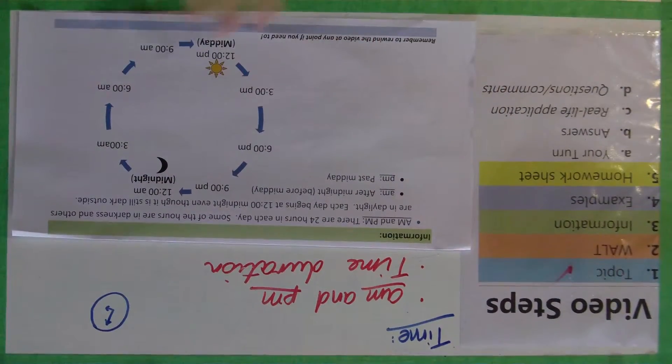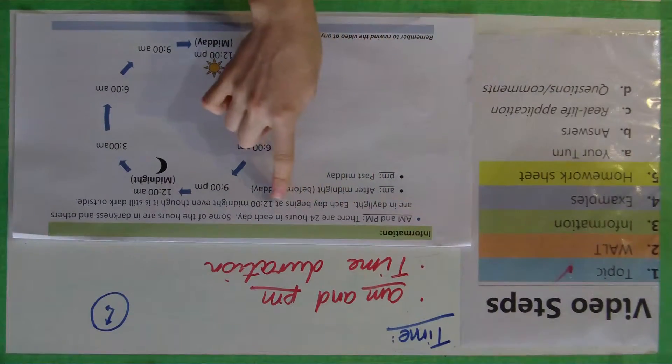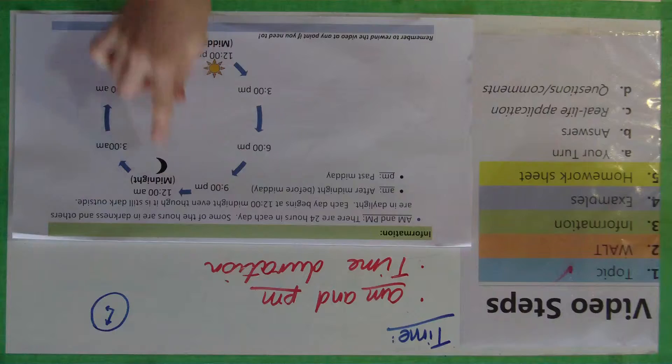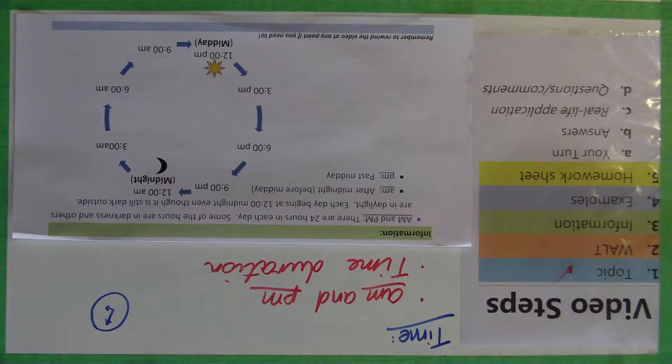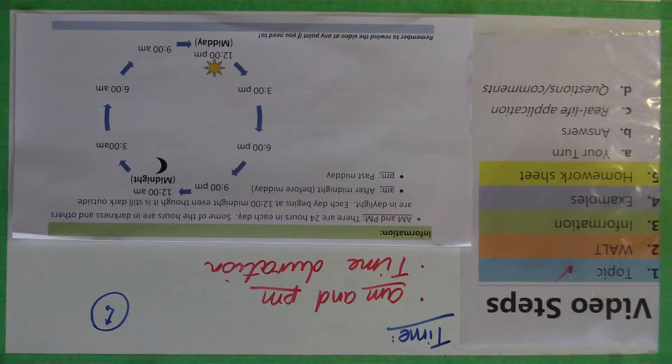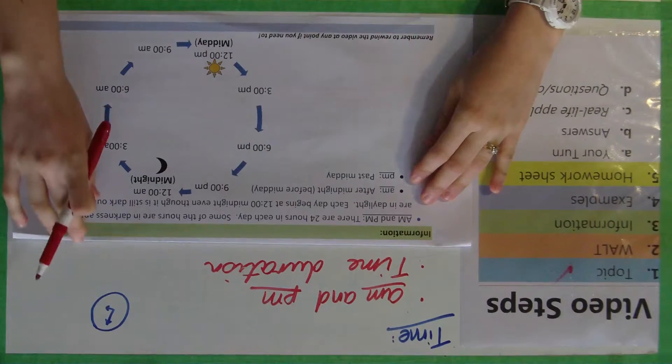Okay, so on this sheet here, I've just got it written down, a.m. and p.m. There are 24 hours in each day. Some of the hours are in darkness and others are in daylight. Each day begins at 12 o'clock midnight, even though it is still dark outside. And this is just showing you about after a.m. and p.m. This is just an easy way for me to remember it when I was learning it when I was your age.